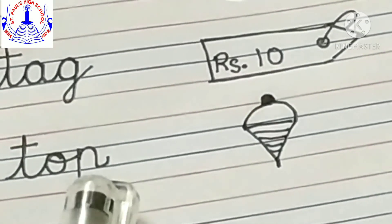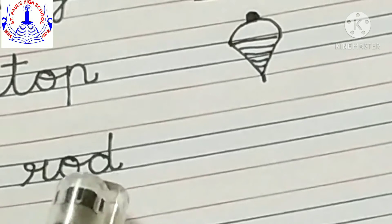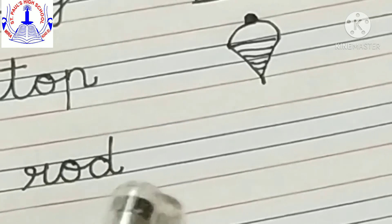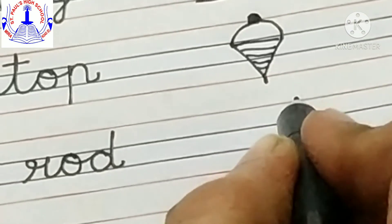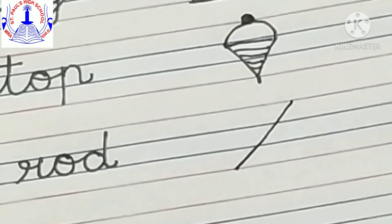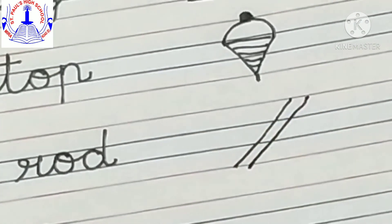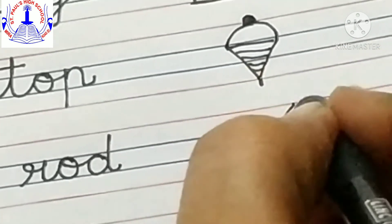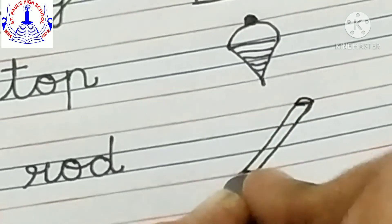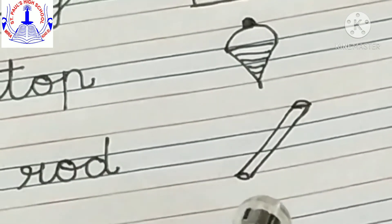The next is R-O-D, rod. For rod, make one slanting line, two slanting lines. Now we have to join this with a circle this way — a small circle. This is a rod — rod, picture of rod.